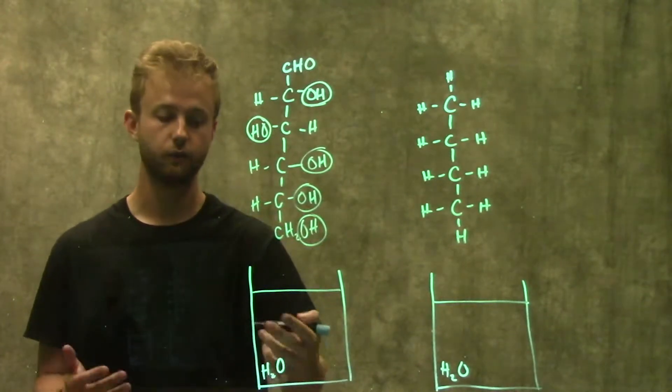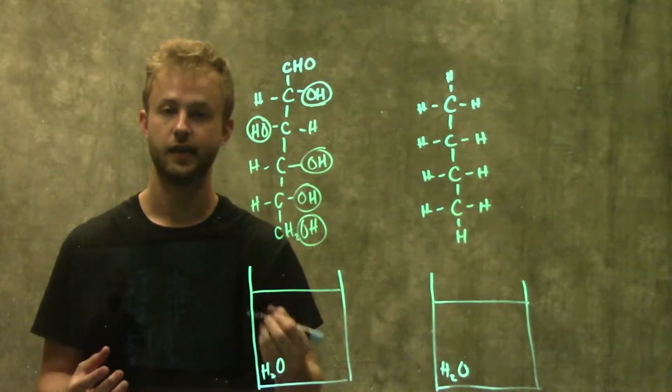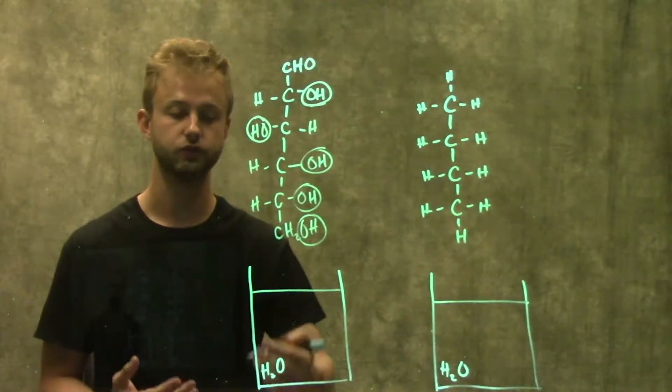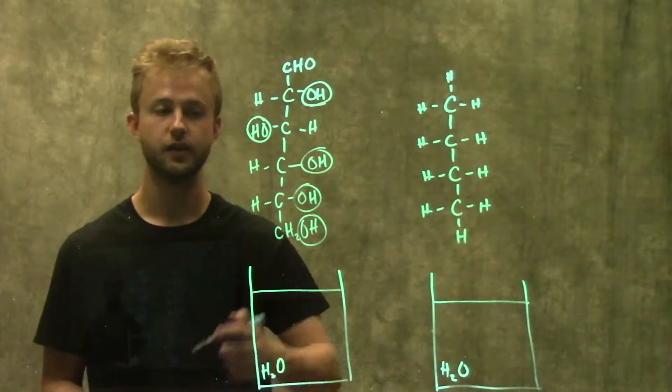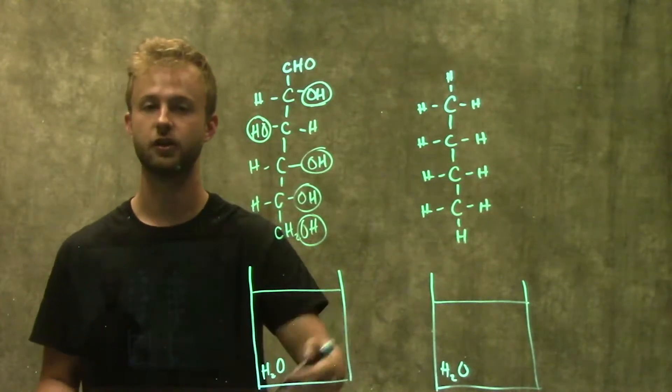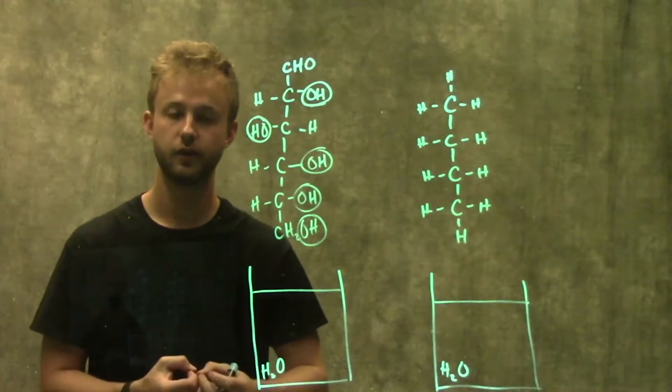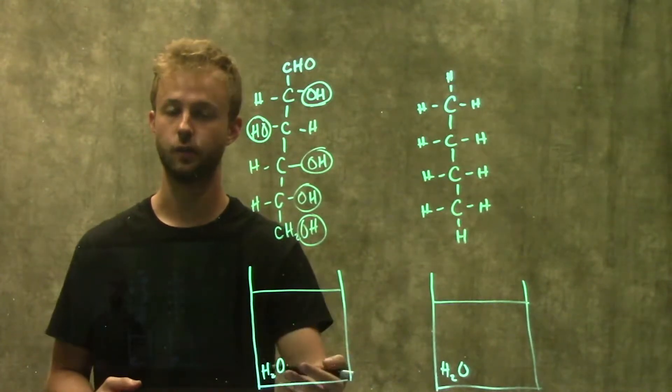We also know that water, again with bonds between hydrogen and oxygen, is a polar molecule so water is also polar. So we also know that like dissolves like, so a polar substance and another polar substance are going to be able to interact well with one another and glucose will dissolve in water.